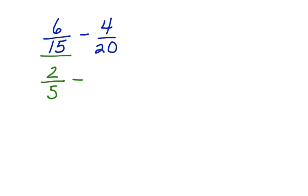Bring down the subtraction. 4 twentieths can also be simplified. 4 is the common factor. 4 divided by 4 is 1. 20 divided by 4 is 5. Now I have a very simple problem. 2 fifths minus 1 fifth is equal to 1 fifth.